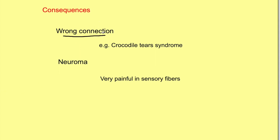A third consequence is the formation of wrong connections. For example, crocodile tears syndrome occurs in patients with Bell's palsy — a palsy of the seventh cranial nerve. During regeneration, cross connections with other nerves form, causing lacrimation while eating. The person is not actually crying, but stimulation of the nerve while eating causes tears to fall — hence the term crocodile tears syndrome. Finally, there can be formation of a neuroma — an entangled mass of nerve sprouts that fail to grow into the Schwann cell columns, which is very painful, especially in sensory fibers.